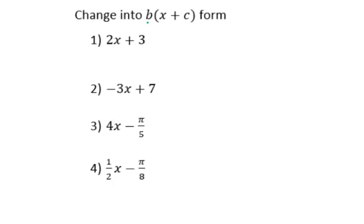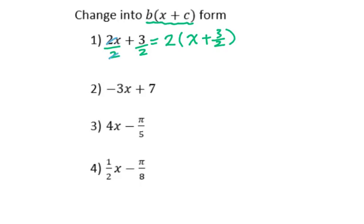Change the following into b times (x plus c) form. For number 1, factor out 2, then divide each term by 2. You will get x plus 3 over 2. For number 2, take out negative 3, so divide by negative 3. This reduces to x minus 7 over 3, since positive and negative gives negative.